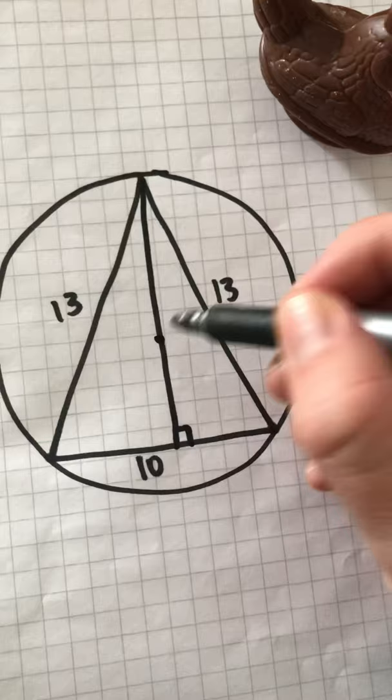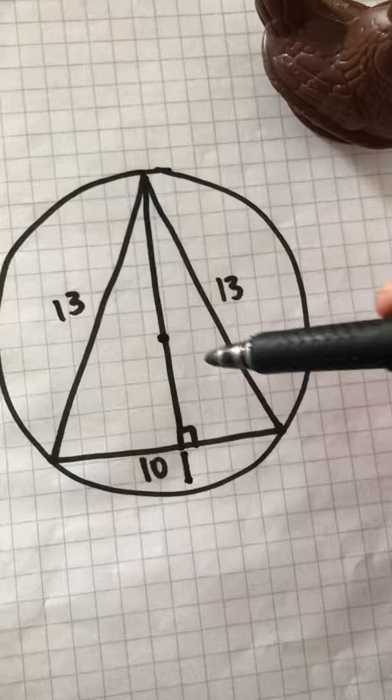Then we can find this little length. Firstly, find the height. That's going to be 12 due to Pythagoras. This length is 5.